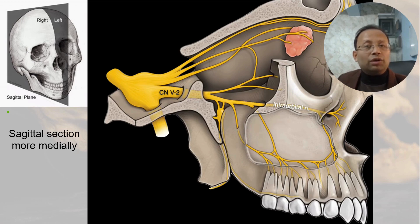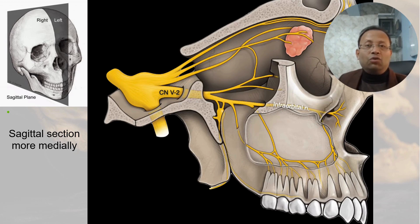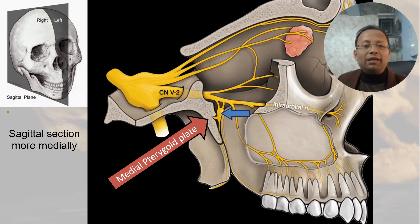If we look at a sagittal section taken more medially through the sphenopalatine fossa, we can clearly see the maxilla anteriorly, and posteriorly it is the medial pterygoid plate — not the lateral pterygoid plate. And between them, we can see the sphenopalatine ganglion within the sphenopalatine fossa.